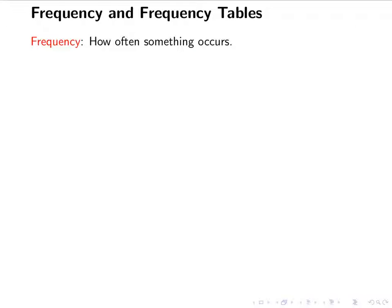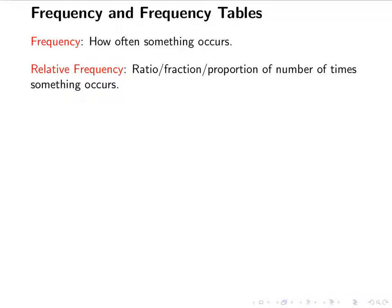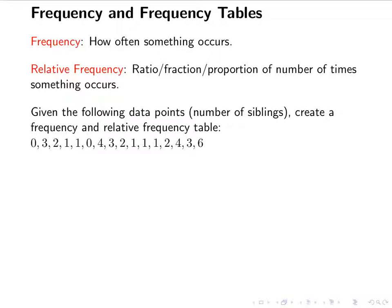Hello everyone, today we're going to look at frequency and frequency tables. The frequency of something is how often it occurs. A relative frequency, which we'll also be looking at, is the ratio or the fraction or the proportion of the number of times something occurs. So we're usually given the raw data — the data points — which in this case is number of siblings, and we're going to create a frequency and a relative frequency table.